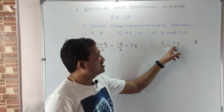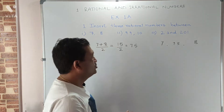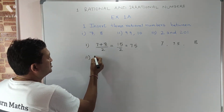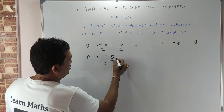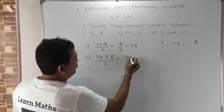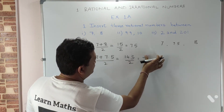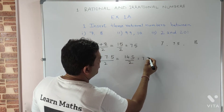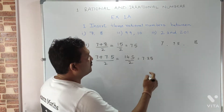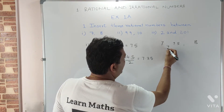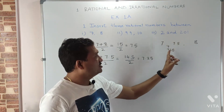Now we have to find two more rational numbers between seven and eight. So we will find the number between seven and seven point five, following the same method. We need to find the mean of seven and seven point five. So seven plus seven point five upon two equals fourteen point five upon two, and we get seven point two five.